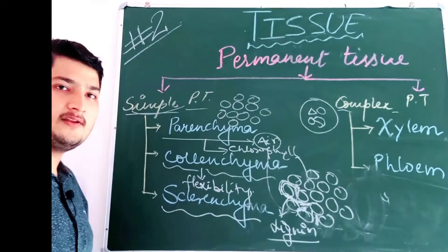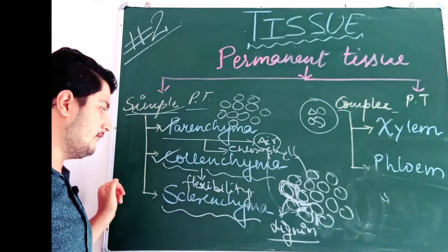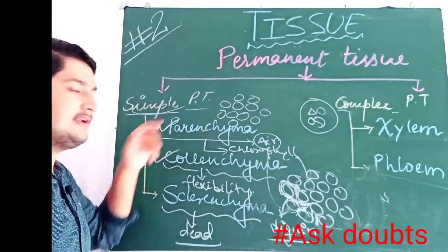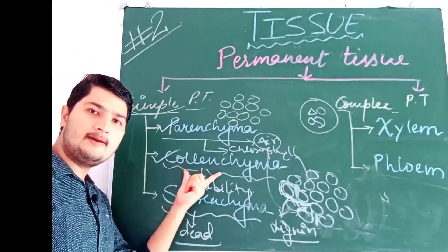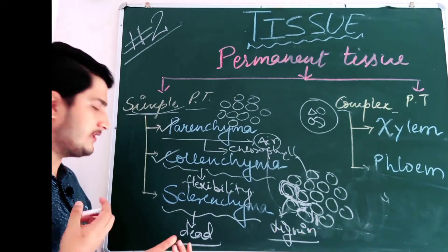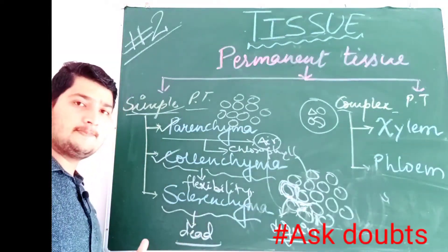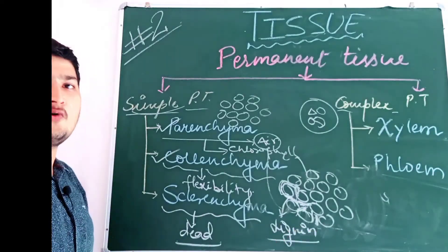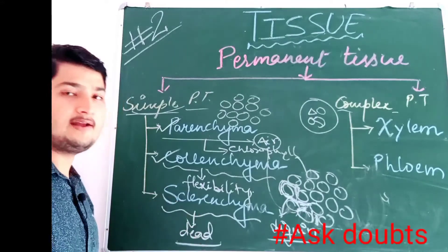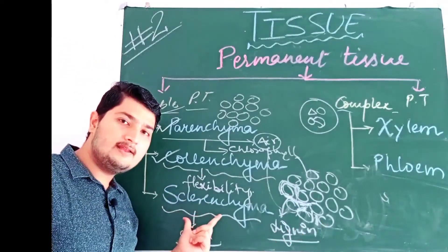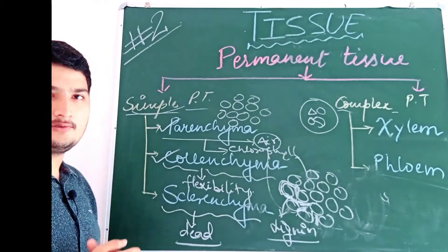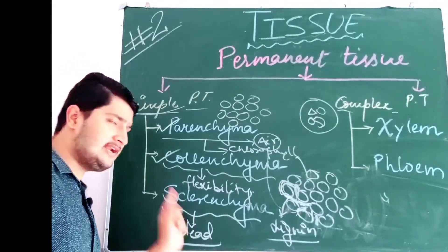Next is sclerenchyma. Parenchyma and colenchyma are living tissues, but sclerenchyma is a dead tissue. The function of parenchyma is storage — it can store food, chlorophyll, or air. Colenchyma provides flexibility to the plant. Sclerenchyma, being made up of dead cells, helps in providing support through stiffness and hardness to the plant. It is usually found in the outermost cover of the coconut — the coconut husk. How hard is it? Because in that husk of the coconut, sclerenchyma is present.